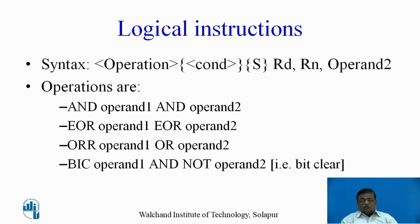Next are the logical instructions. The syntax requires specifying the operation, then the condition, then the S bit to decide whether flags should change, then the destination register, source operand 1, and the second operand. The logical instructions in ARM7 are: AND, which performs a bitwise AND between operand 1 and operand 2; EOR for XOR operations; ORR for OR operations on source operand 1 and operand 2; and BIC, the bit clear instruction, which performs AND between operand 1 and the bitwise NOT of operand 2.